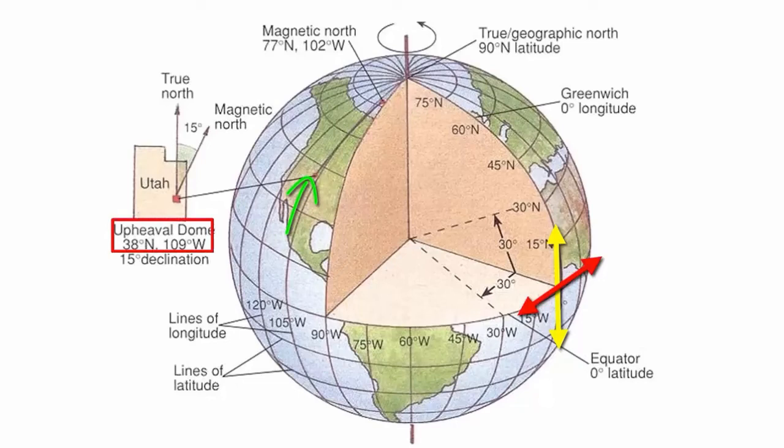If we do both those things, we end up at upheaval dome and nowhere else. Thus, upheaval dome is located at 38 degrees north of the equator and 109 degrees west of the prime meridian.